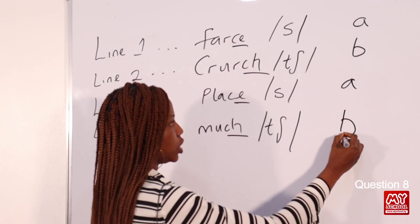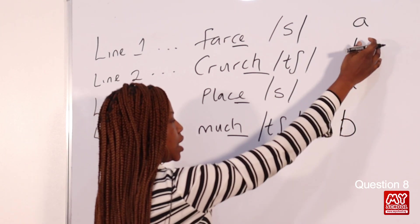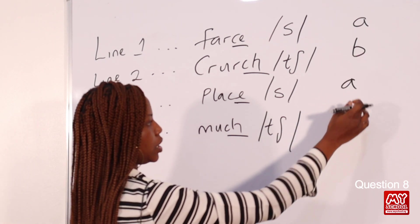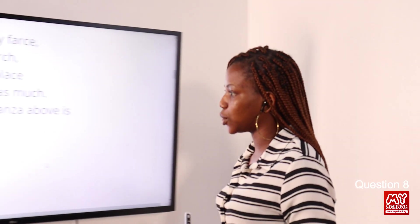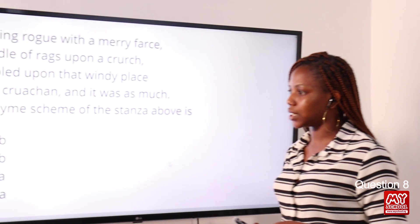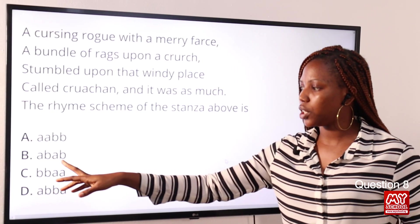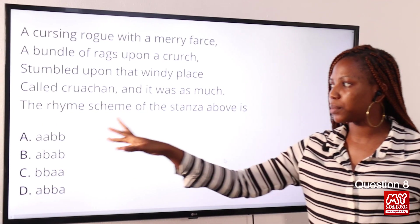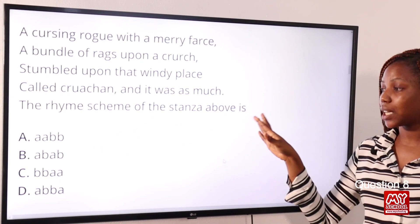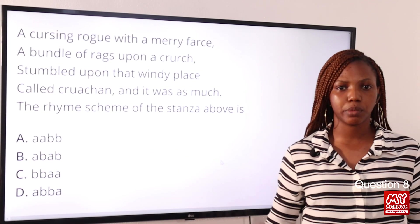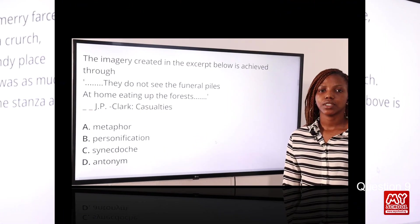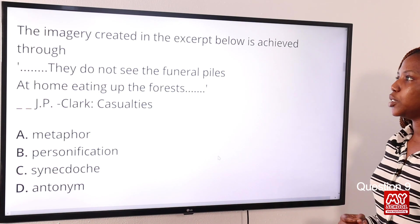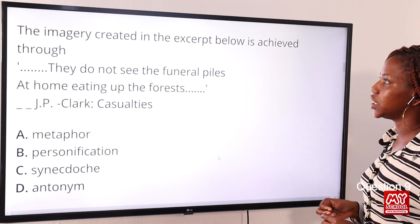'Place' shares its pattern with 'fast' giving it letter A, and 'much' shares its pattern with 'crutch' giving it letter B. So the rhyme scheme is ABAB, which matches Option B: ABAB.